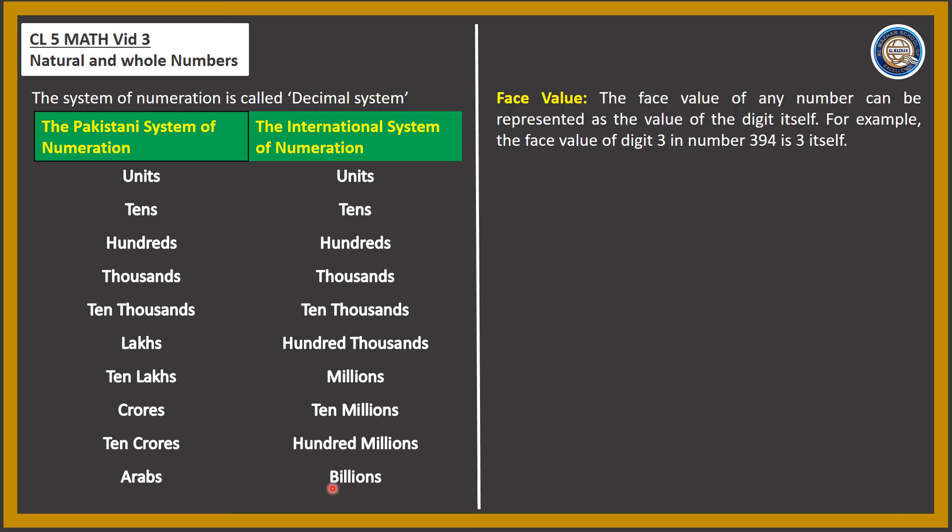Next, let's discuss face value. What is face value? The face value of any number is represented as the value of the digit itself. For example, the face value of the digit 3 in the number 394 is simply 3.